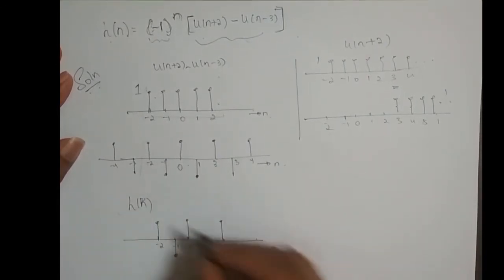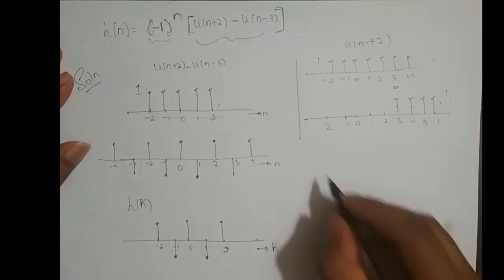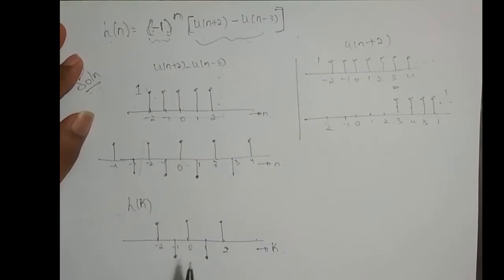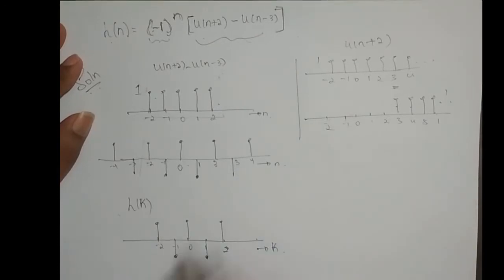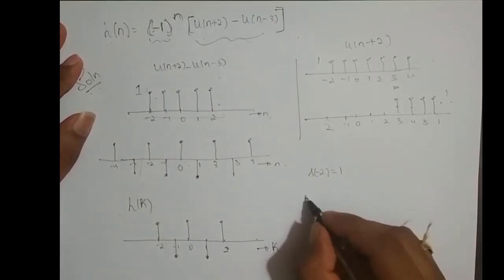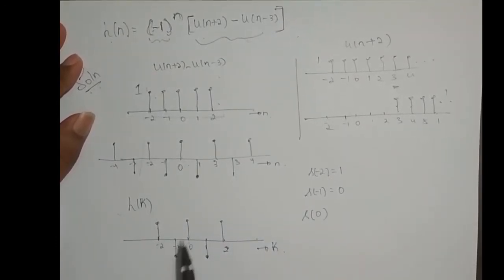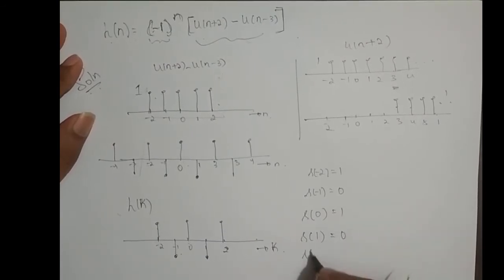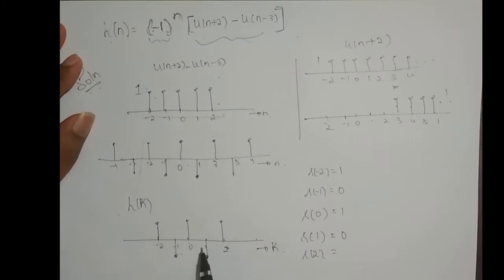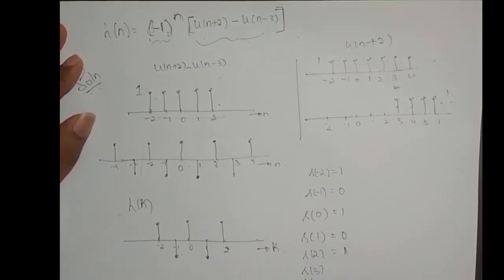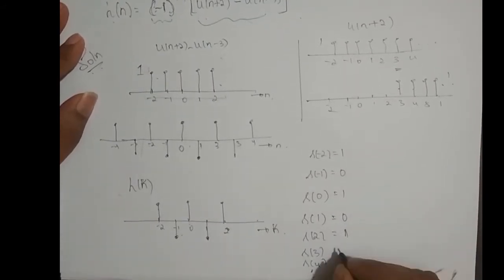The next step is to replace n by k and compute the running sum. At n equal to minus 2, the running sum is 1. At n equal to minus 1, it is 1 minus 1, which is 0. At n equal to 0, it is 1 minus 1 plus 1, equal to 1. At n equal to 1, it is 1 minus 1 plus 1 minus 1, which is 0. At n equal to 2, it is 1 minus 1 plus 1 minus 1 plus 1, which is 1. After 2, s of 3, s of 4, and so on remain 1.